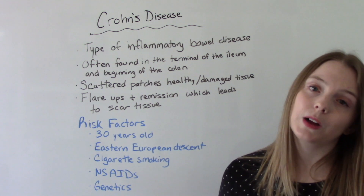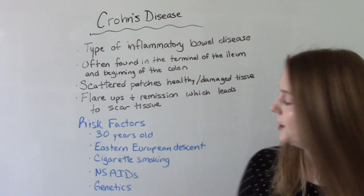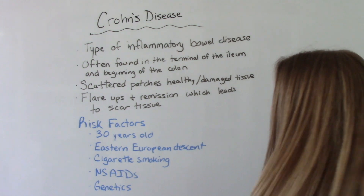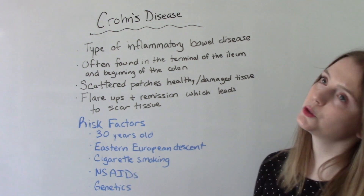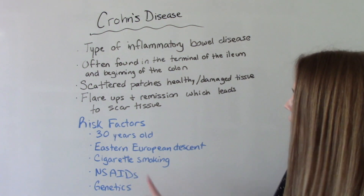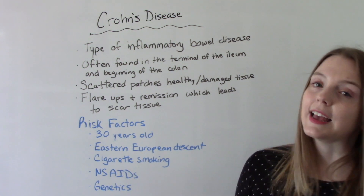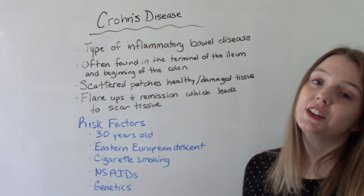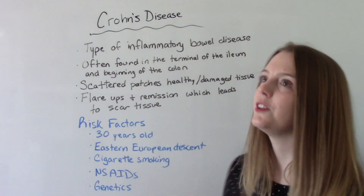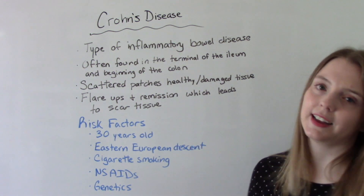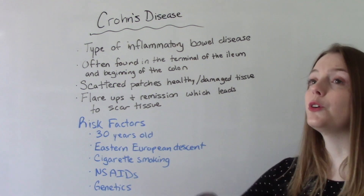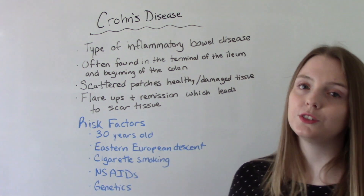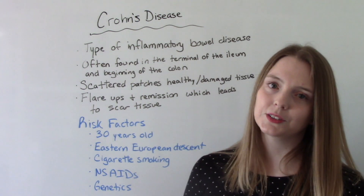Who's at risk for Crohn's disease? It's usually diagnosed around age 30, in people of Eastern European descent, those who are cigarette smokers, who use NSAIDs routinely, and then genetics — if you have a family history of it you're more likely to get it. There is no official cause of Crohn's disease, so they look for these risk factors.